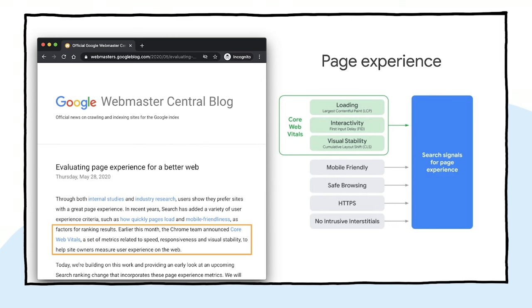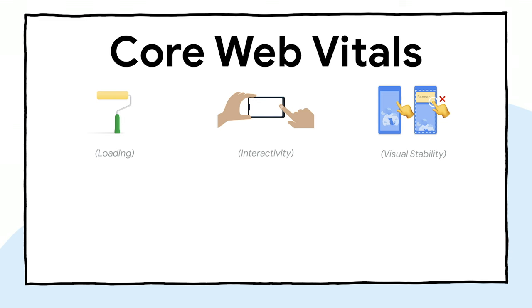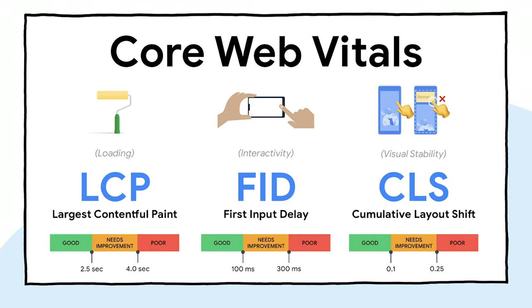You may have seen Google Search announce an upcoming search ranking change that incorporates page experience metrics. These metrics include the Core Web Vitals which, together with a few other signals, paint a pretty holistic picture about the quality of user experiences on a page. Core Web Vitals are a set of metrics related to speed, responsiveness, and visual stability.